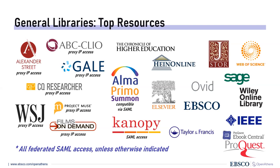OpenAthens has two means of connecting to resources. First, SAML — the typical single sign-on protocol. But it also has a managed IP proxy element in the same service, so for service providers that aren't currently supporting SAML, we can absolutely connect to them using IP. We can even determine whether your service providers are functional in terms of connectivity to OpenAthens.